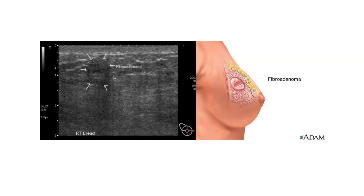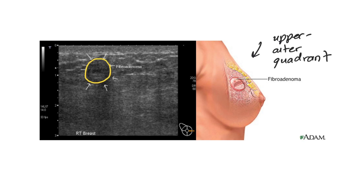Here are some photos of a fibroadenoma. It's often present in the upper outer quadrant of the breast, and on ultrasound you'll often see a very circular, well-circumscribed lesion that is solid in appearance. If it were more of a cyst, which is fluid-filled, it would have a more hyperechoic appearance. I hope you found this video helpful — if you did, please like and subscribe, and as always, good luck studying everyone.